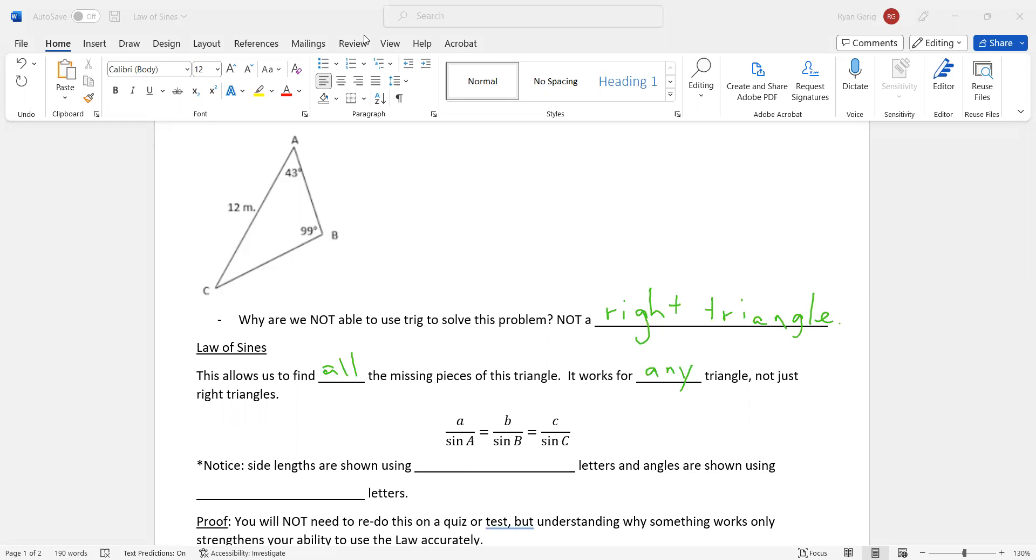I'll show you what that means here in a little bit. Another way you might see me do this, you might see sine A over A equals sine B over B, which equals sine C over C. It's just saying you can flip them and it's still equal.